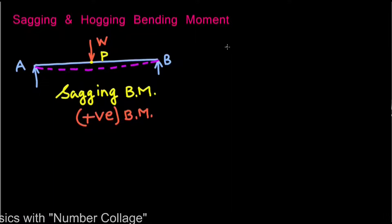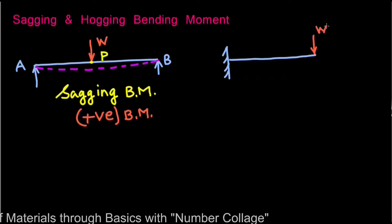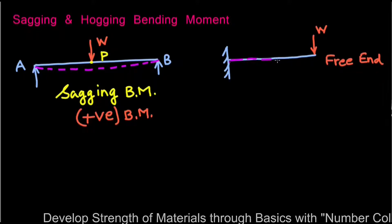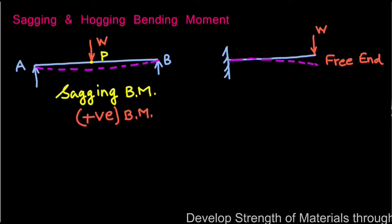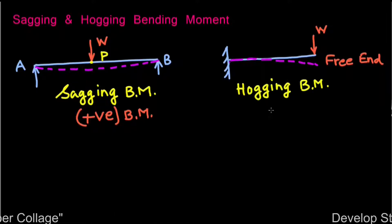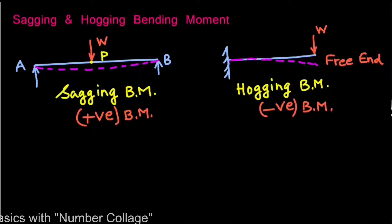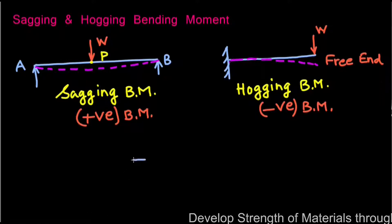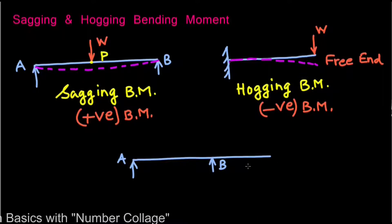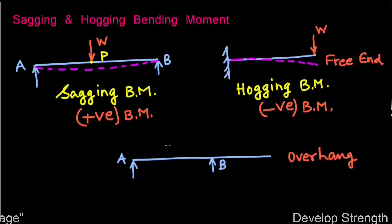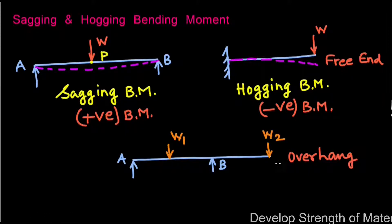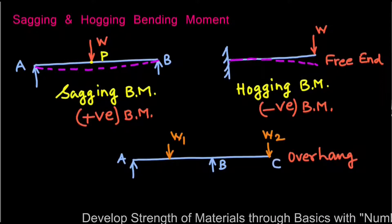In case of a cantilever beam loaded by load W at its free end, the beam bends or tends to bend under the action of this load in the downward direction. The bending moment at any section of this cantilever is referred to as hogging bending moment and it is treated as a negative bending moment. Both sagging and hogging bending moments can be seen in a beam which is simply supported over span AB with an overhang and loads W1 and W2.